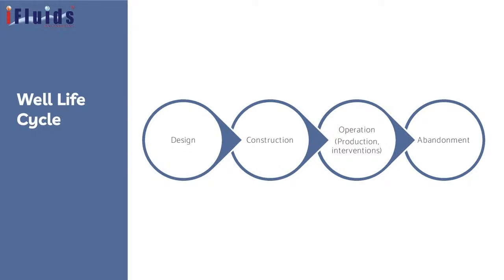The well life cycle starts from design, then construction, then production. When it is no longer possible to produce from the same well, some interventions are needed — zone changes and other requirements — and finally, up to abandonment. The entire sequence — design, construction, operation, production, interventions, and abandonment — is called the well life cycle.